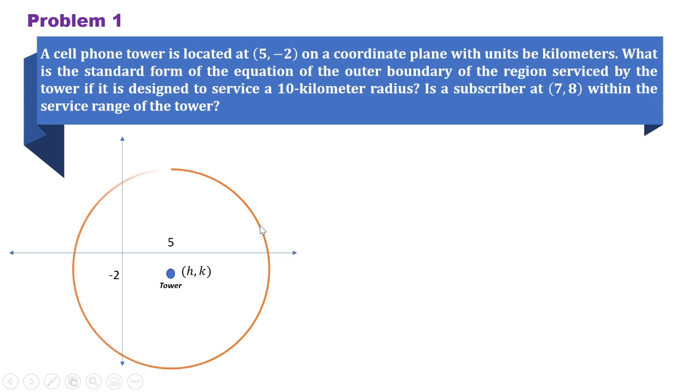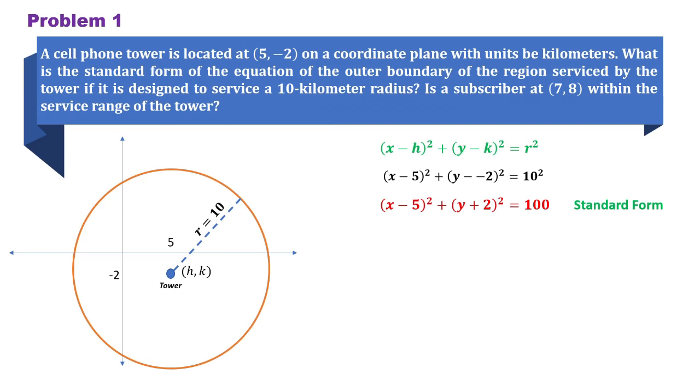We're going to use it as the center of our circle at h, k. Let's say this is the circle with a 10-kilometer radius. To answer the standard form of the equation of the circle, we can use this format. And by substitution, we can have the squared quantity of x minus 5 plus the squared quantity of y plus 2 is equal to 100.